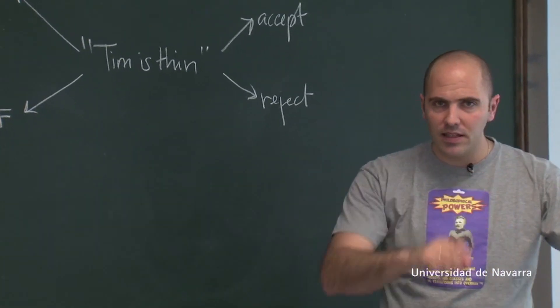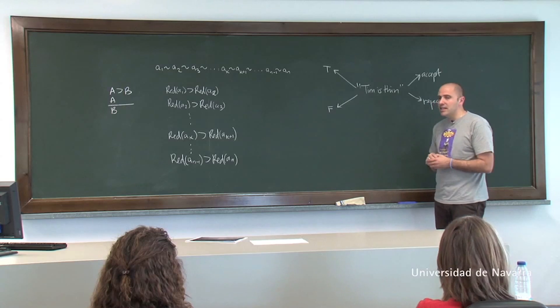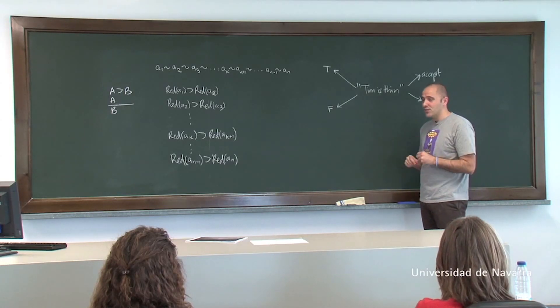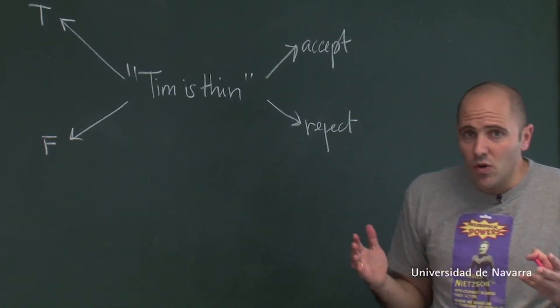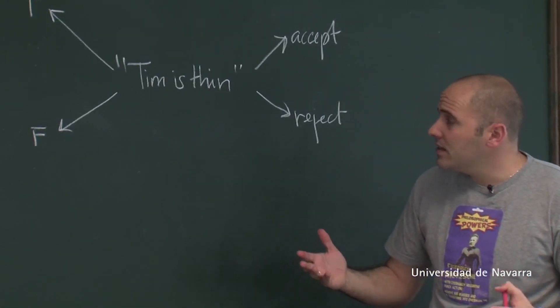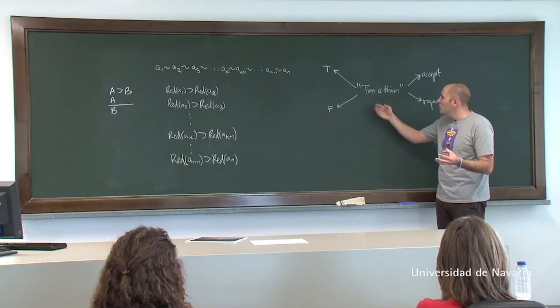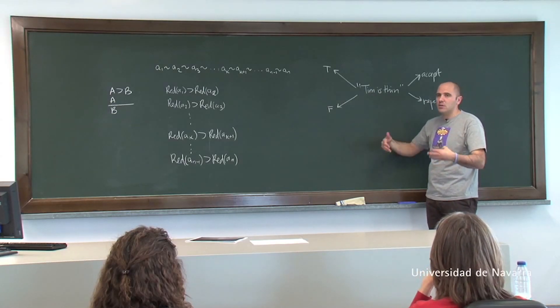So Tim is supposed to be like a borderline case for the predicate thin. So some people are clearly thin, some people are clearly not thin. But Tim is somehow in the border. So we cannot decide simply.